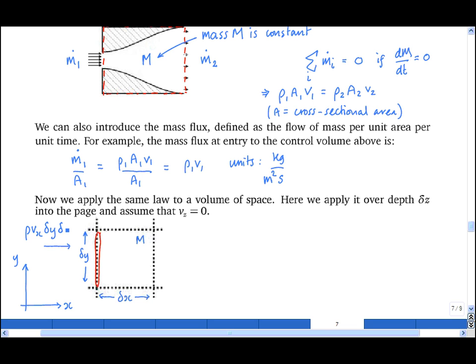Remember it's also times delta z because it's per unit depth into the page. The flow out on the right is, in big brackets, rho plus the partial derivative of rho in the x direction, d rho by dx, times the distance in the x direction, multiplied by the velocity in the x direction, which is vx, plus partial dvx by dx delta x.